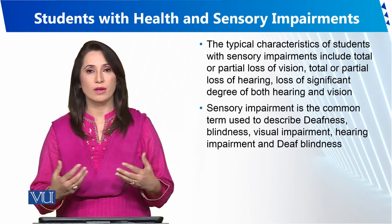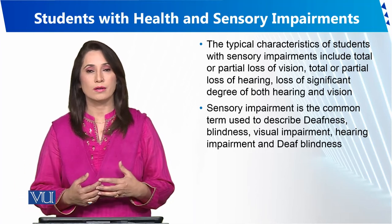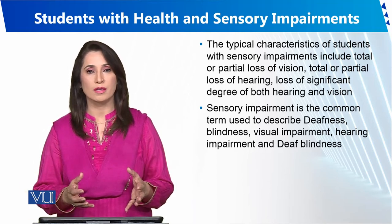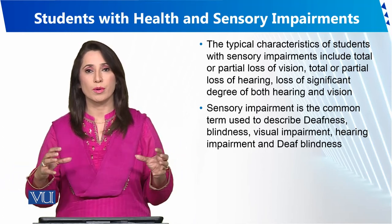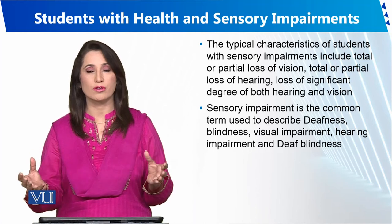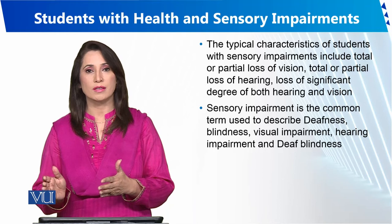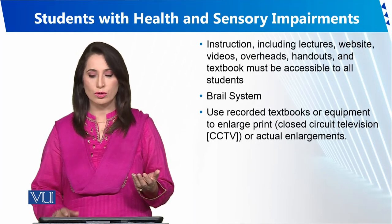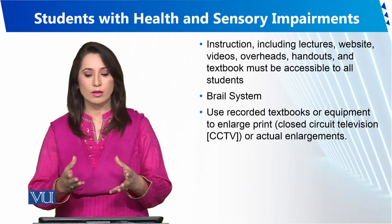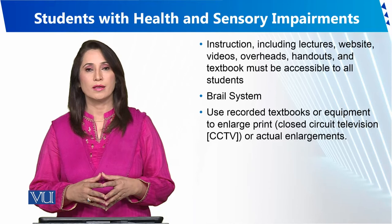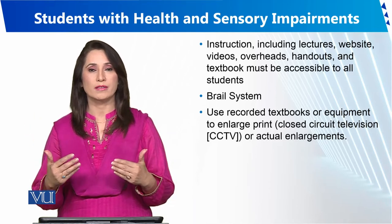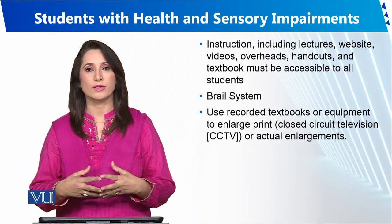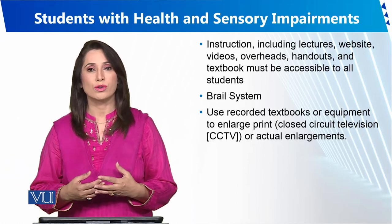Completely blind young children generally cannot take education in a normal school, so there are special schools and special instructional strategies for them. If a blind student is in a regular school or institution, they can be advised and supported. Other instructional aids include lectures, videos, and websites. For students with mild or moderate blindness, teachers can help with enlarged fonts and pictorial expressions to provide education in an engaging way.